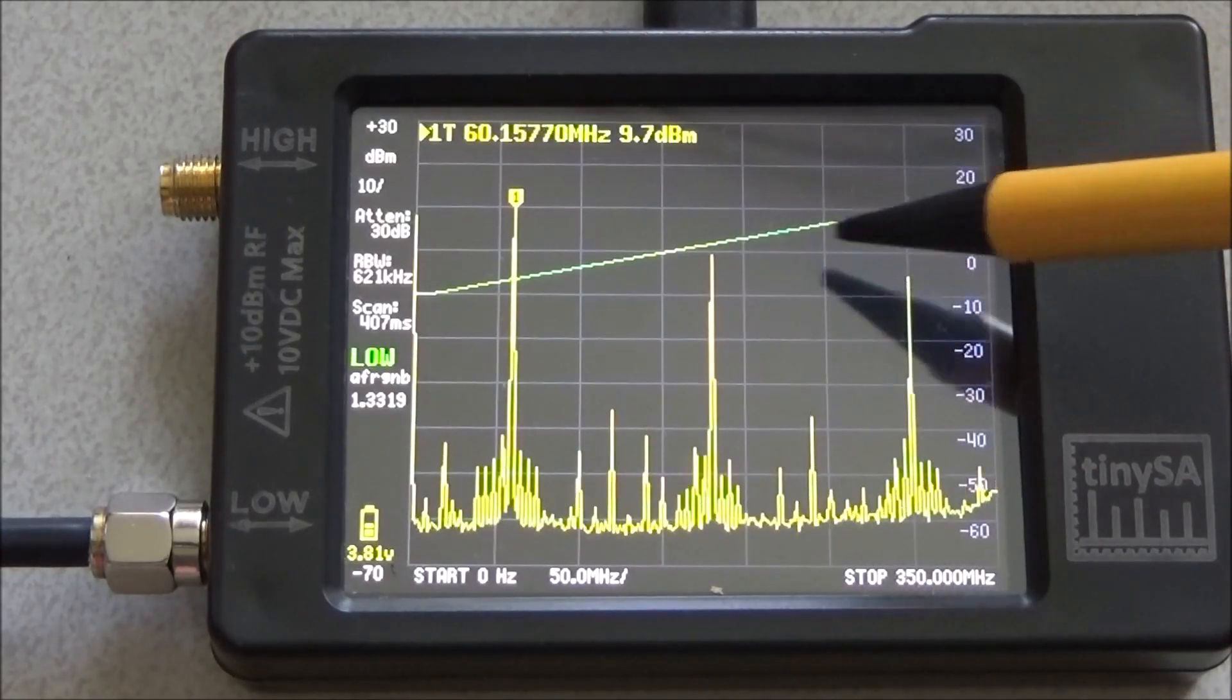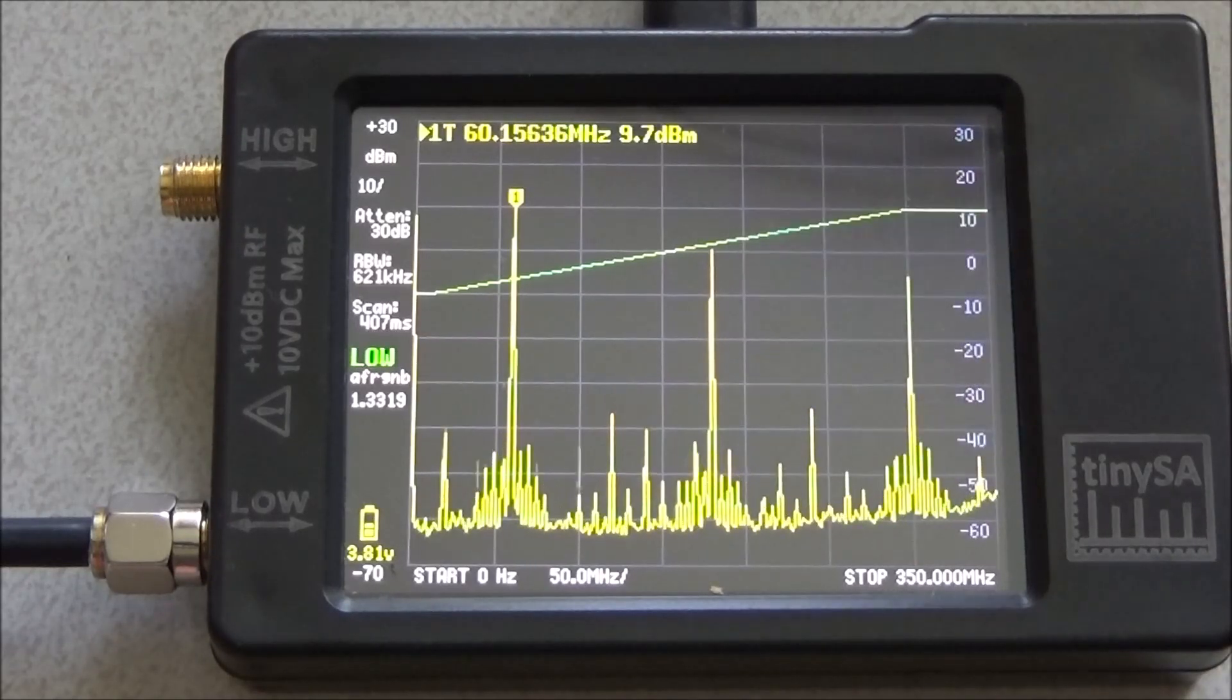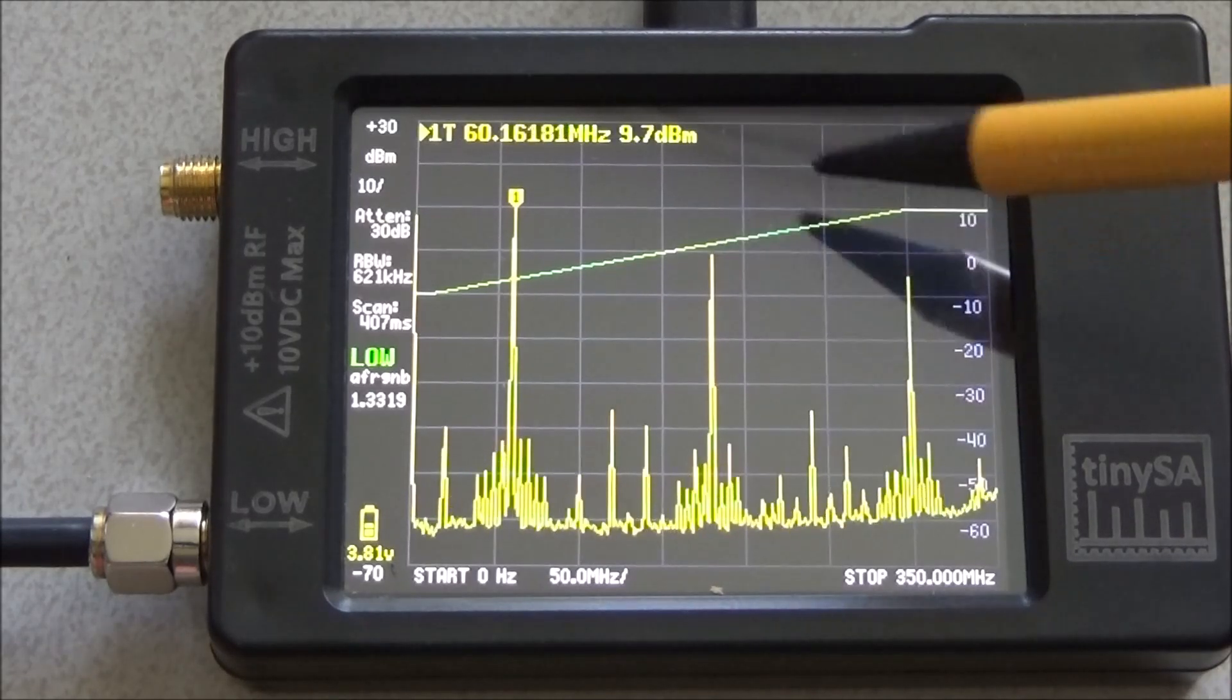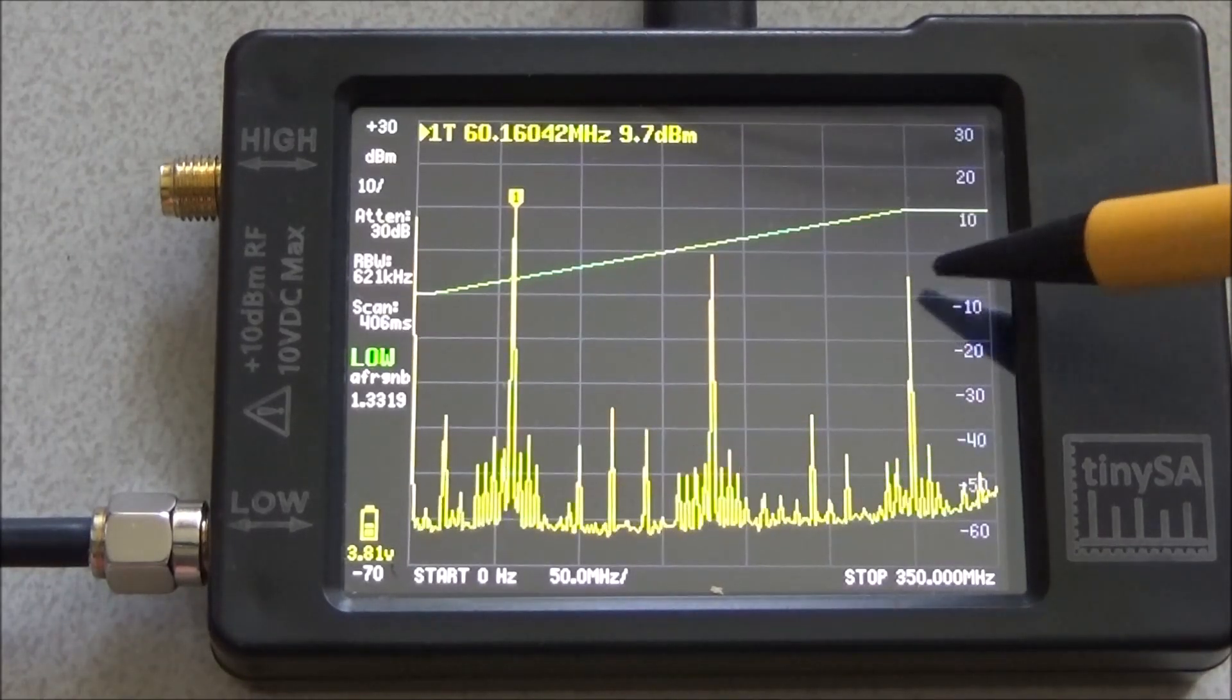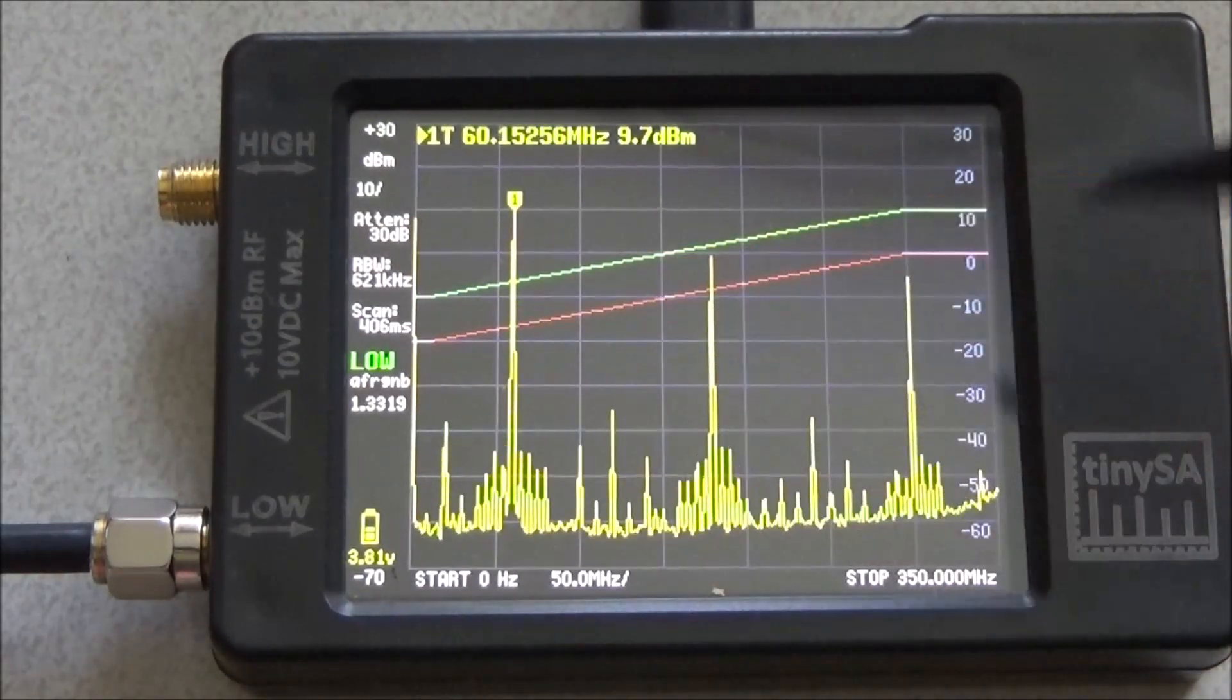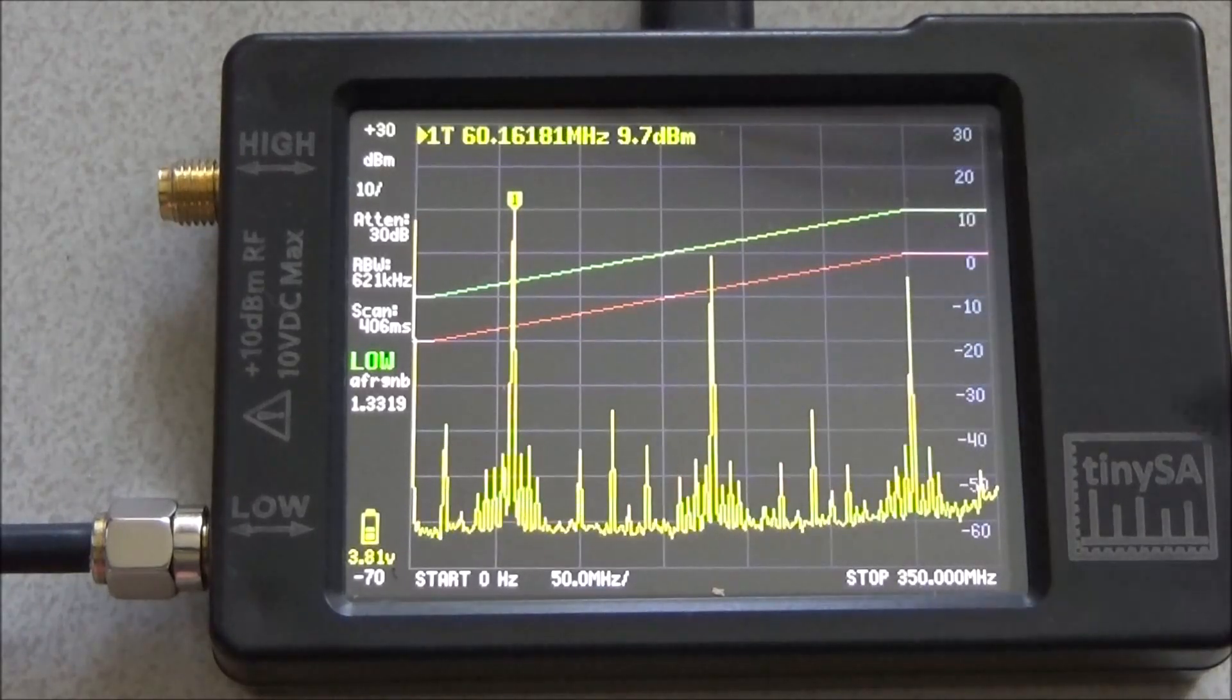For instance those lines could be that a certain signal has to be below a line during the measurement. You want to have a visual indication where that point is where the trace should stay below. So with this you can easily set a line or even multiple lines.